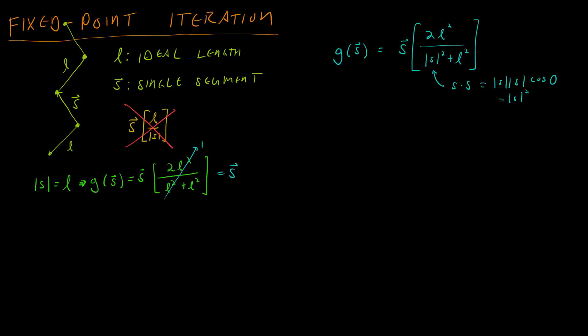But what happens when the length of s is less than L? Then G of s is equal to the same thing as before, except we'll put 2L squared in the numerator. But now the length of s is slightly less than L, so you'll have something a little bit smaller here in the denominator, which means this whole number will be a little bit bigger, which means that G of s is slightly bigger than s.